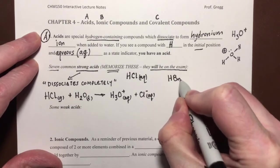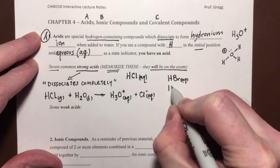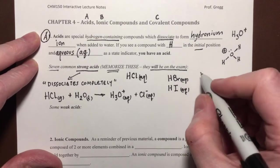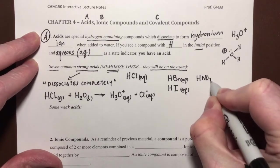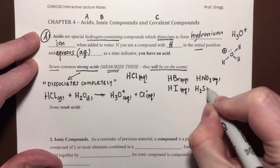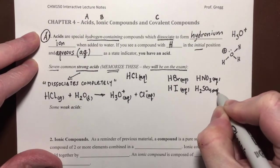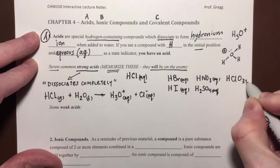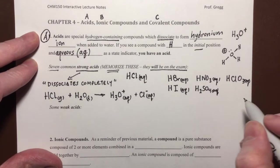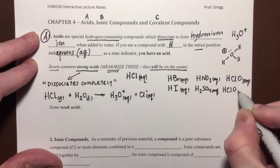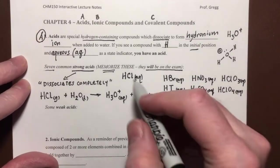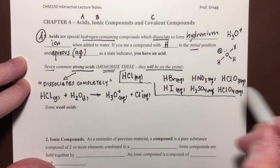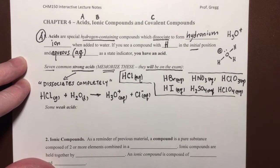And we need to know their formulas, and that they have an aqueous state indicator. So one of the seven is HCl. And I'm going to say, there's HBr. There's HI with a capital I. That's three of them. There are four more. There's HNO3. There's H2SO4. And then the last two are HClO3 and HClO4. Okay, so those are our seven strong acids. And you have to memorize those for the exam.